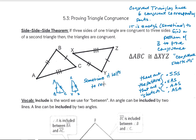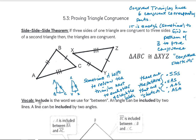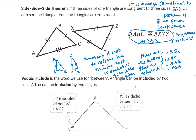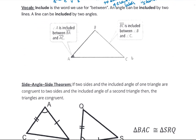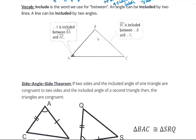Leg-Leg for right triangles is actually the same thing as Side-Angle-Side, where the right angle is the congruent angle between the two sides. Sometimes it helps to redraw the triangles so they're in the same orientation, so you can compare the different parts.